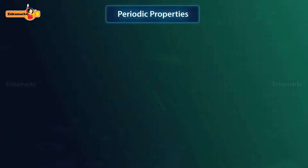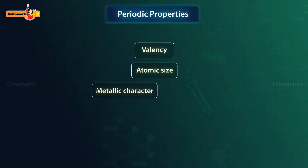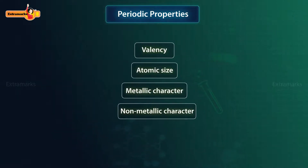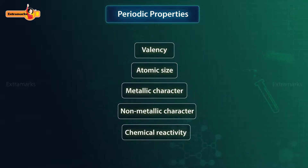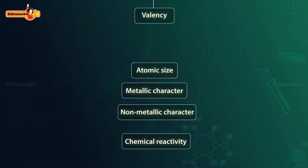Let us discuss how the various properties of elements — such as valency, atomic size, metallic and non-metallic character, and chemical reactivity — change on moving across a period or down the group.